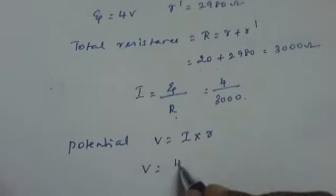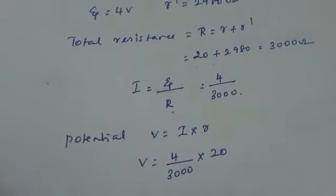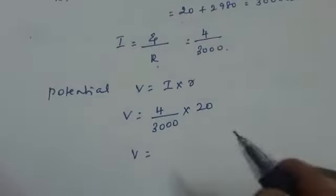V is 4 by 3000 into R, which is 20. This is potential across the wire.